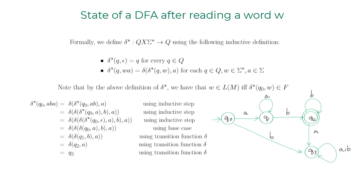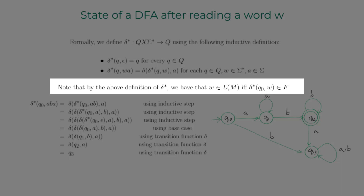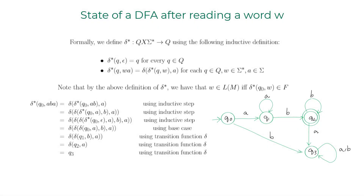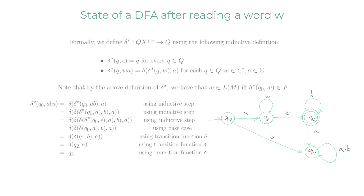Note that from the definition of delta star, a string w belongs to the language of machine m if and only if delta star of q naught comma w belongs to the final states set F. Now let's do the formal construction of the product of two DFAs.